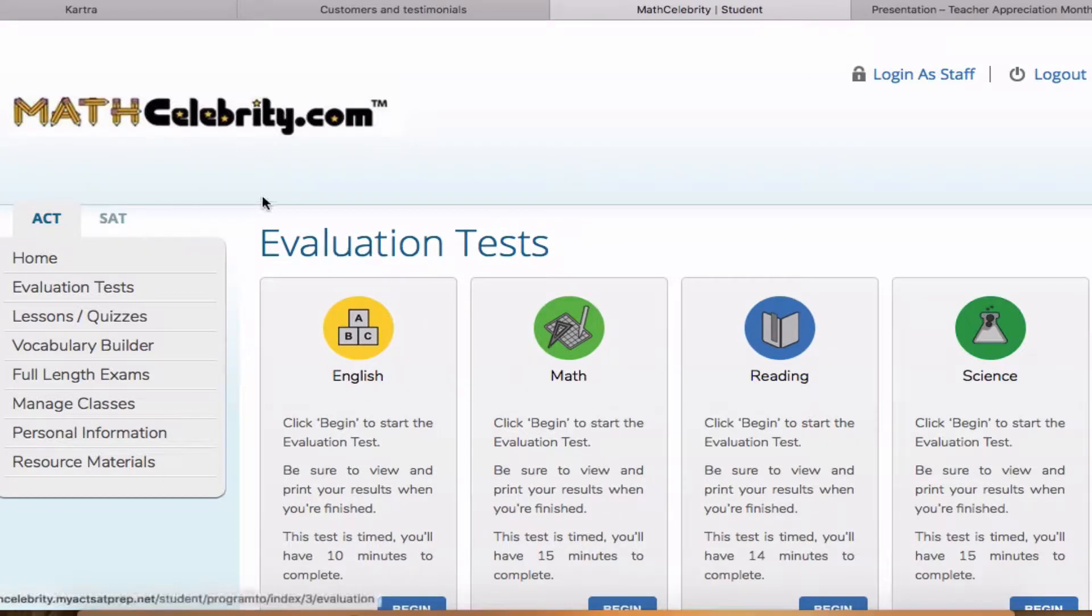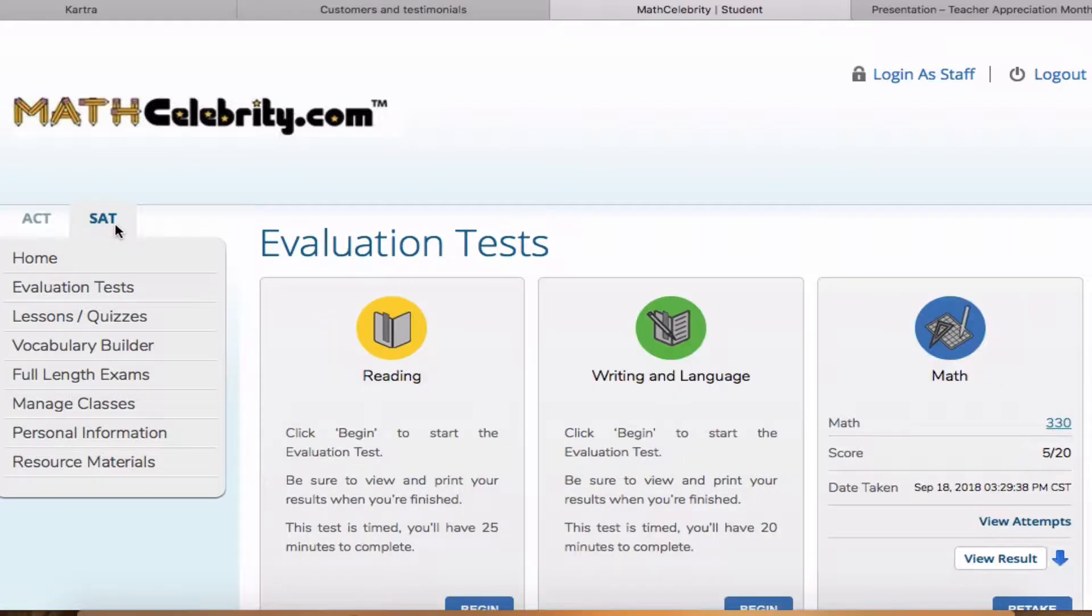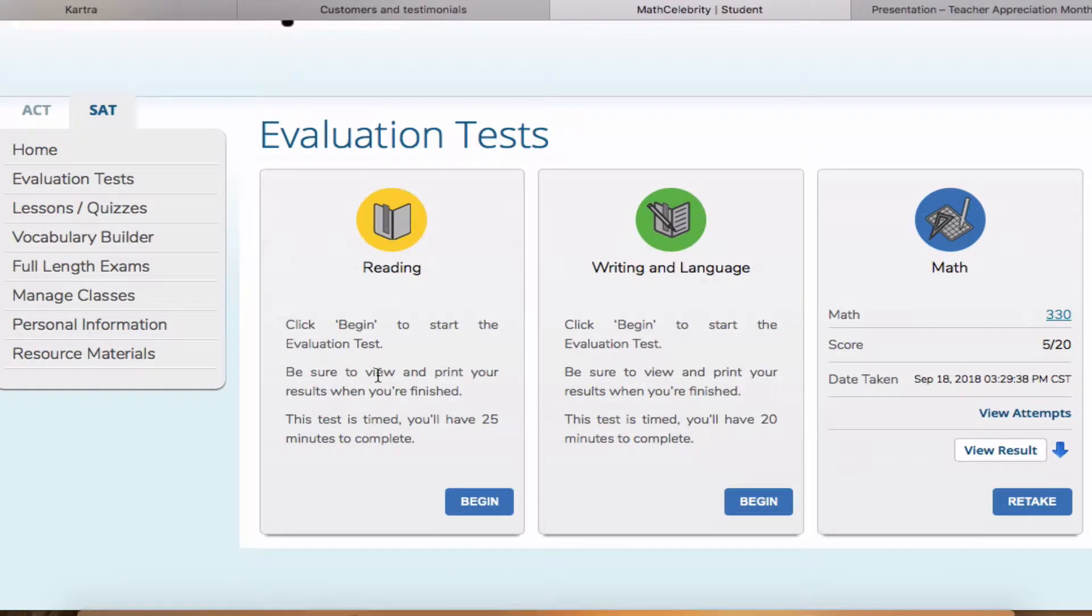Now you can click ACT, and it'll show you the four subjects: English, Math, Reading, and Science. Or you can click SAT, and it'll show you the three subjects: Reading, Writing and Language, and Math.